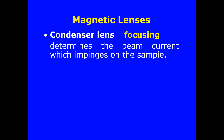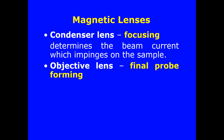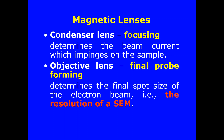The condenser lens is a type of magnetic lens whose main purpose is focusing — it determines the beam current which impinges on the sample. The objective lens is also a type of magnetic lens, and its role is the final probe forming — it forms the final probe of the electron beam. The role of the objective lens is to determine the final spot size of the electron beam, which determines the resolution of an SEM micrograph. Resolution in SEM can be increased or decreased with the help of the objective lenses.